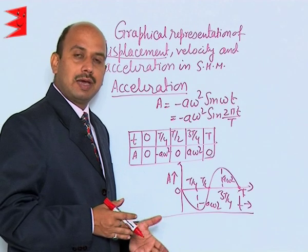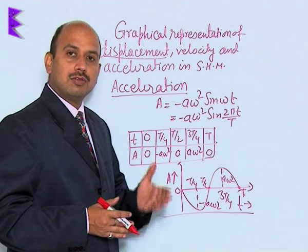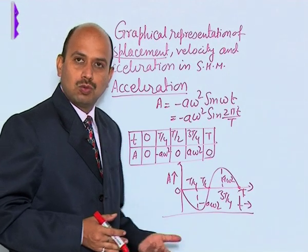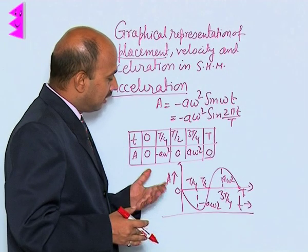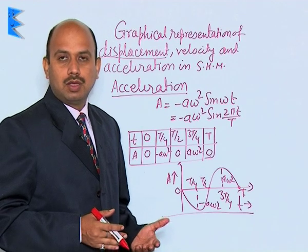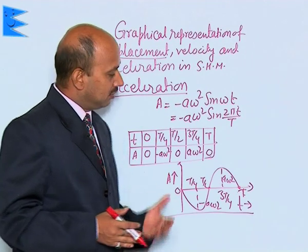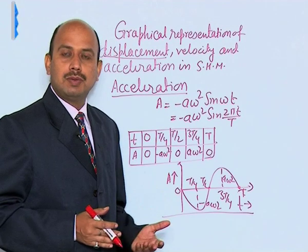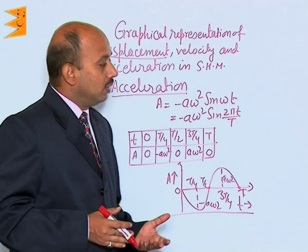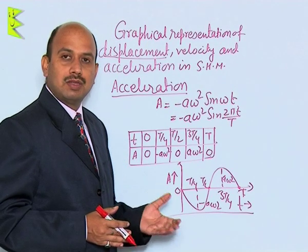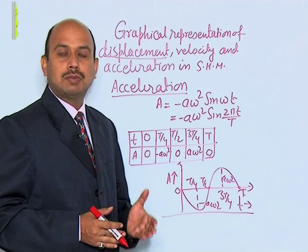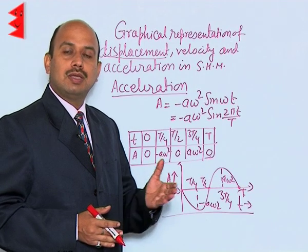From all these three graphs we have seen, velocity is ahead of displacement by pi by 2, and acceleration is ahead of velocity by pi by 2. It means acceleration is ahead of displacement by pi radian. So this is the phase relation between the velocity, acceleration, and displacement of the body executing SHM.